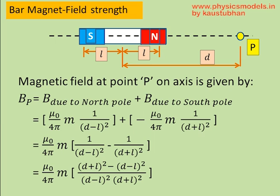Similarly, the distance of point P from the south pole inside the magnet is d+l. So, we just plug that distance into the equation. We take out μ₀/4π m outside the brackets and we are left with those terms inside these brackets.